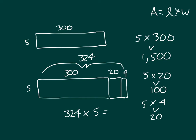And all of these here are partial products: 5 times that 300, 5 times 20, 5 times 4, where we would be able to put them together. 1,500, 100, 20. Putting those areas together, we would have 1,620. So that 324 times 5 equals 1,620.